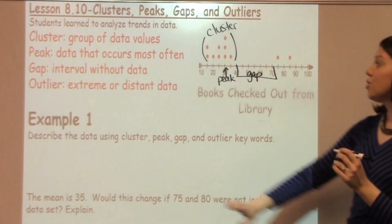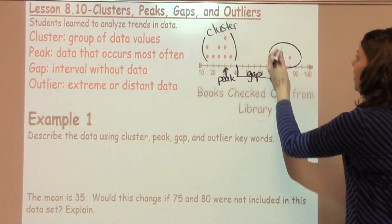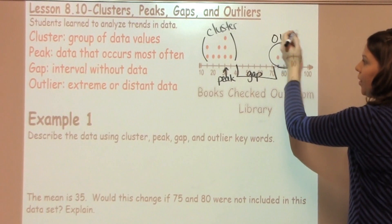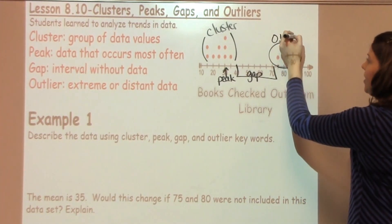Now, an outlier is extreme or distant data. In this case, we've got two outliers right here, which are going to be our scores of about 75 and 85, and those are going to be our outliers.